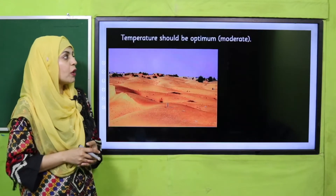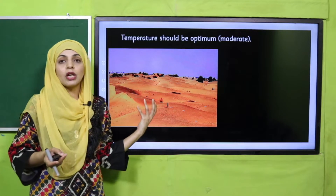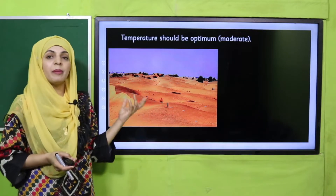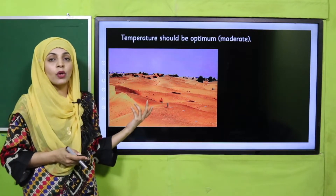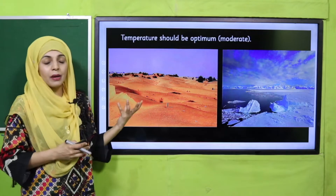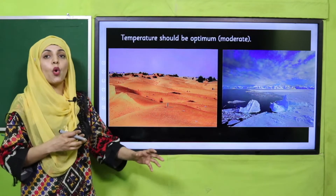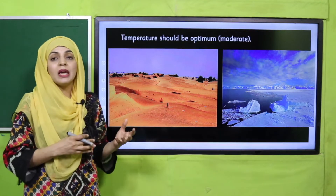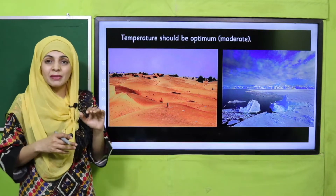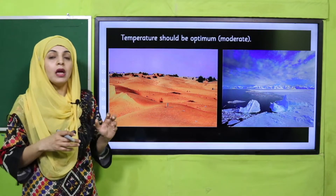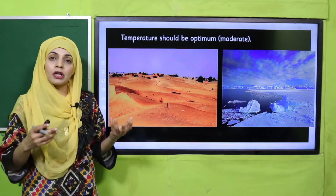Temperature should be optimum, meaning moderate. If temperature is too high, there will be no vegetation and animals will not survive. If there is very low temperature, there will be snow, and many organisms cannot exist in snow. So where will maximum life exist? In places with moderate temperature, such as forests. That is where life is most abundant.